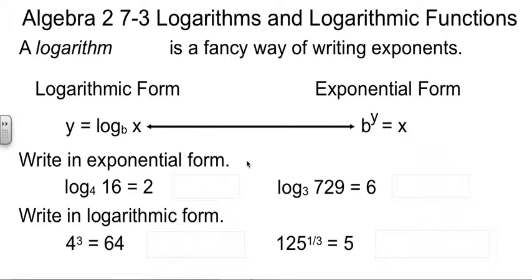They're going to ask you to write some equations in one form or the other, depending on what they've given you. Log base 4 of 16 equals 2 — that's the equation they've given you, and they want us to write this into exponential. The base will stay the base, so it'll be 4. And then the 2 and the 16 trade jobs, so 4 squared equals 16. And we have no doubt that that's a true statement — 4 to the 2nd is indeed 16.